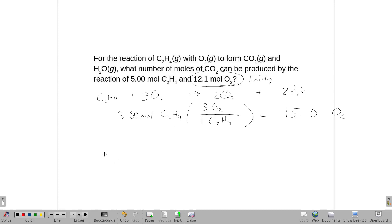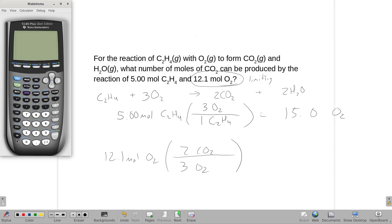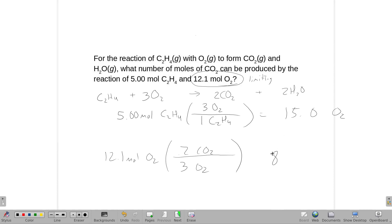All right, now that we know which one's limiting, we're going to take the one that's the limiting reagent and have it tell us how many moles of CO2 could be produced. So for each three O2s, we would get two CO2s. So we're going to take our 12.1, multiply it by two and divide by three, and get 8.07 moles of CO2.